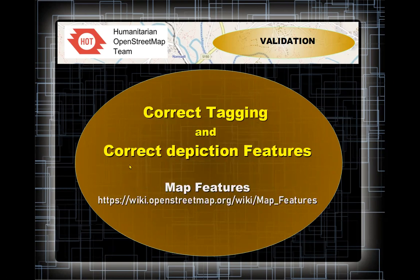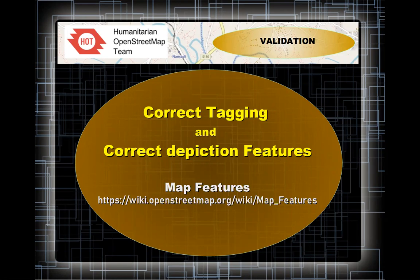To meet OpenStreetMap requirements, we have to have the correct tagging and correct depiction of features. Your bible is going to be the Map Features page on the wiki. You should all familiarize yourself with that — it will explain some of the things you are doing and why, giving you a far better understanding of your mapping. Please use the Map Features wiki page as your bible and read it, understand it, especially for the features you're working on. Go through and look at buildings — how they're drawn and why they're tagged the way they are.